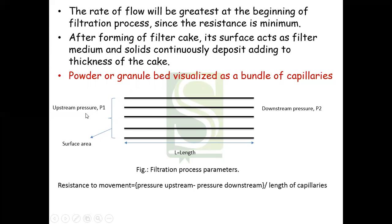From this point, we will be inserting the fluid on this filter media, and then it moves into the collecting vessel. This is the surface area of the filter cake. This is the upstream pressure — the pressure with which the liquid will be flowing onto the filtration media — and this will be the downstream pressure. So P1 is upstream pressure and P2 is downstream pressure. The resistance to movement is pressure upstream minus pressure downstream divided by the length of the capillaries. The driving force for filtration is P1 minus P2, and resistance is given as P1 minus P2 divided by the length of the capillaries.